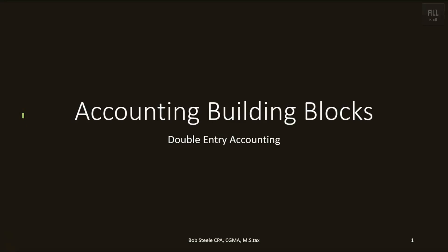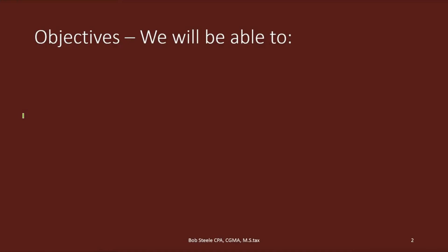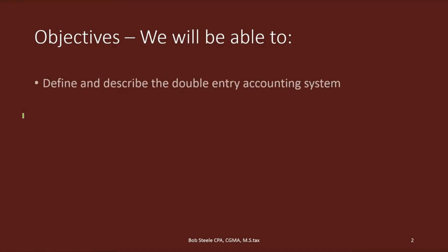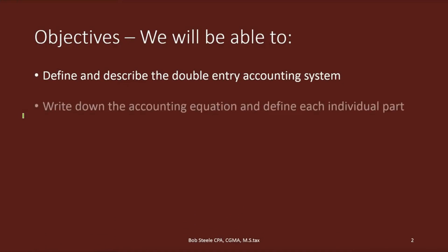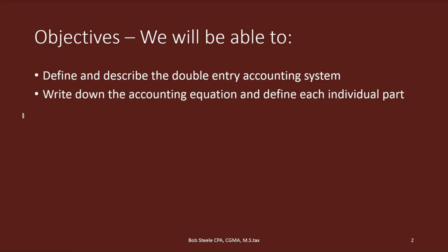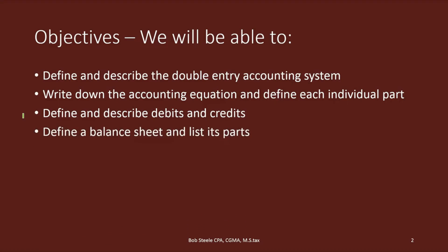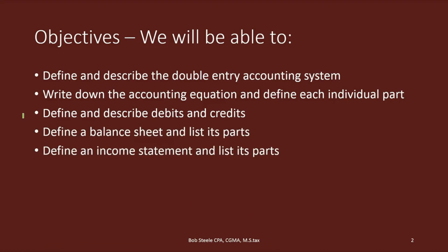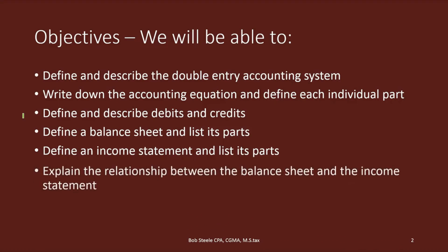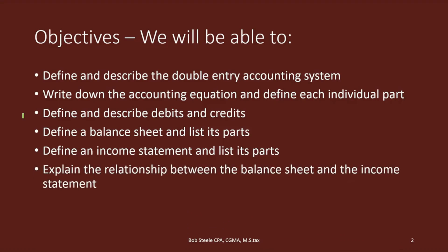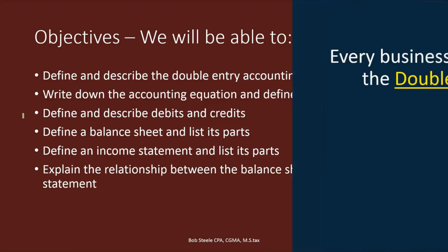In this lecture we will discuss the accounting building blocks and the double entry accounting system. At the end of this we will be able to define and describe the double entry accounting system, write down the accounting equation and define each individual part of it, define and describe debits and credits, define a balance sheet and list its parts, define an income statement, list its parts, and explain the relationship between the balance sheet and the income statement.